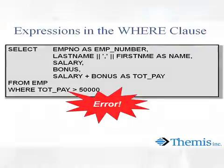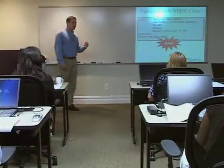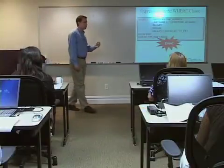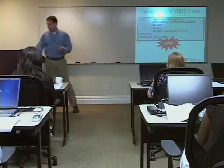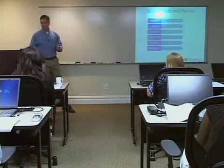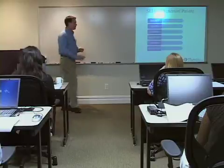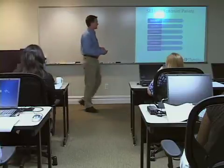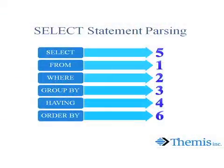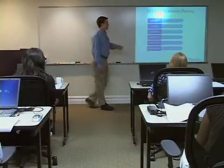What it has to do with is the order of processing — the order in which the database actually parses my select statement. We've looked at all six clauses of the select statement: select, from, where, group by, having, and order by. That's the order that you actually write things in — what data do I want, what table does that come from, what rows do I want, grouping and having for summarization, and order by for row ordering.